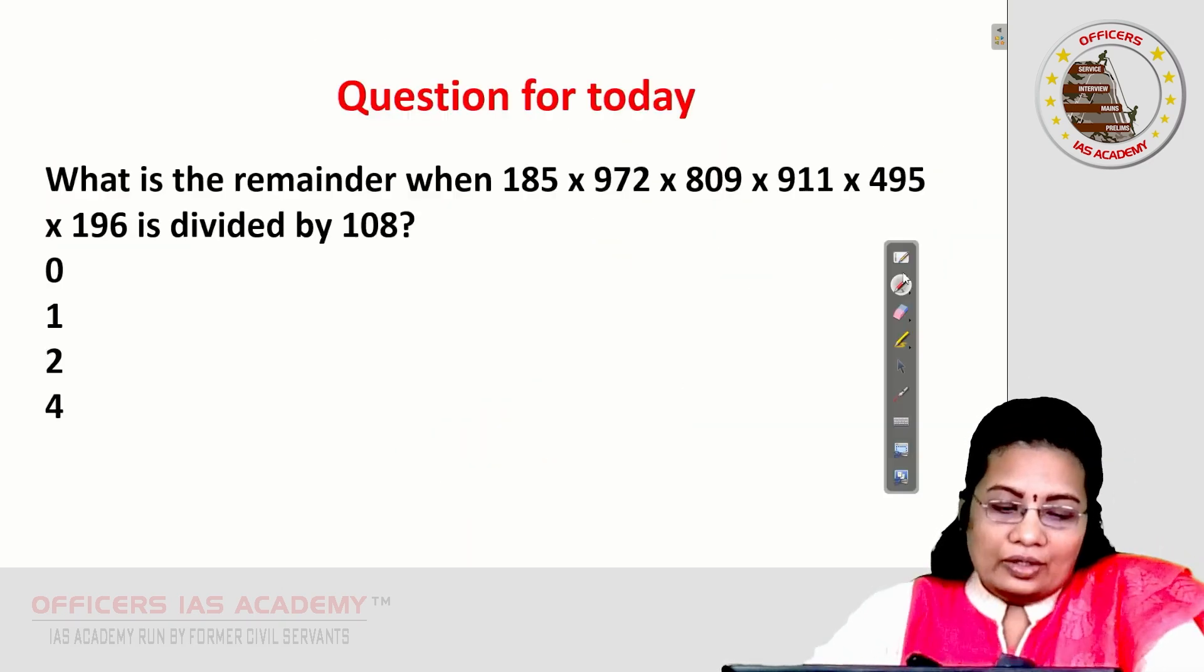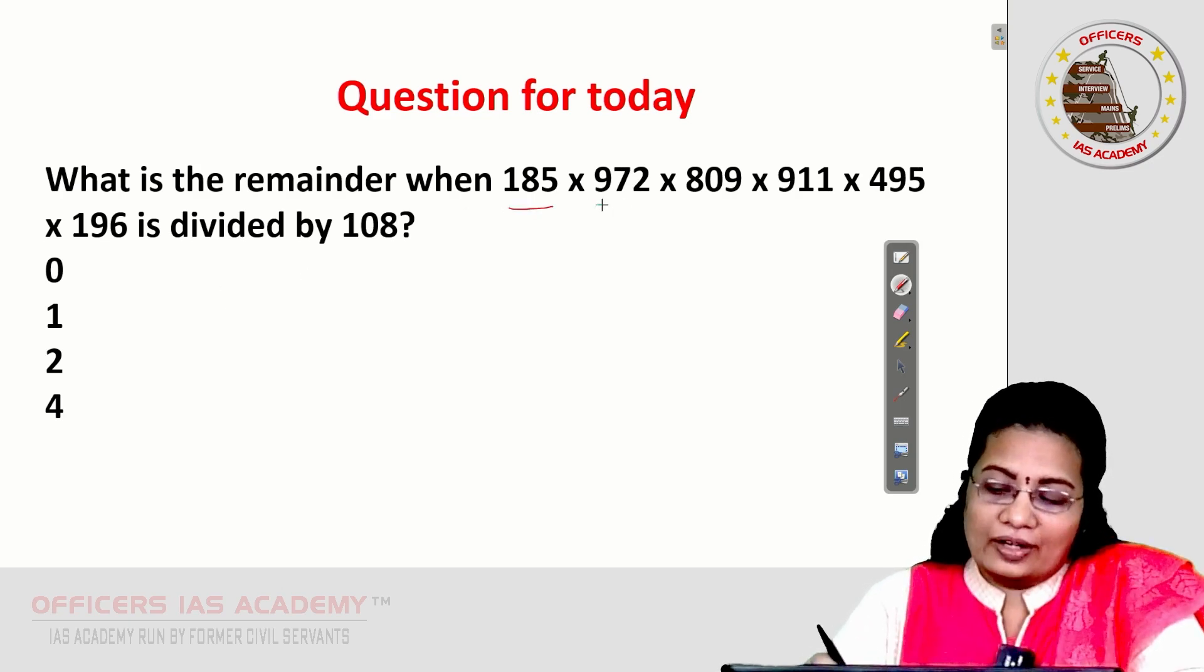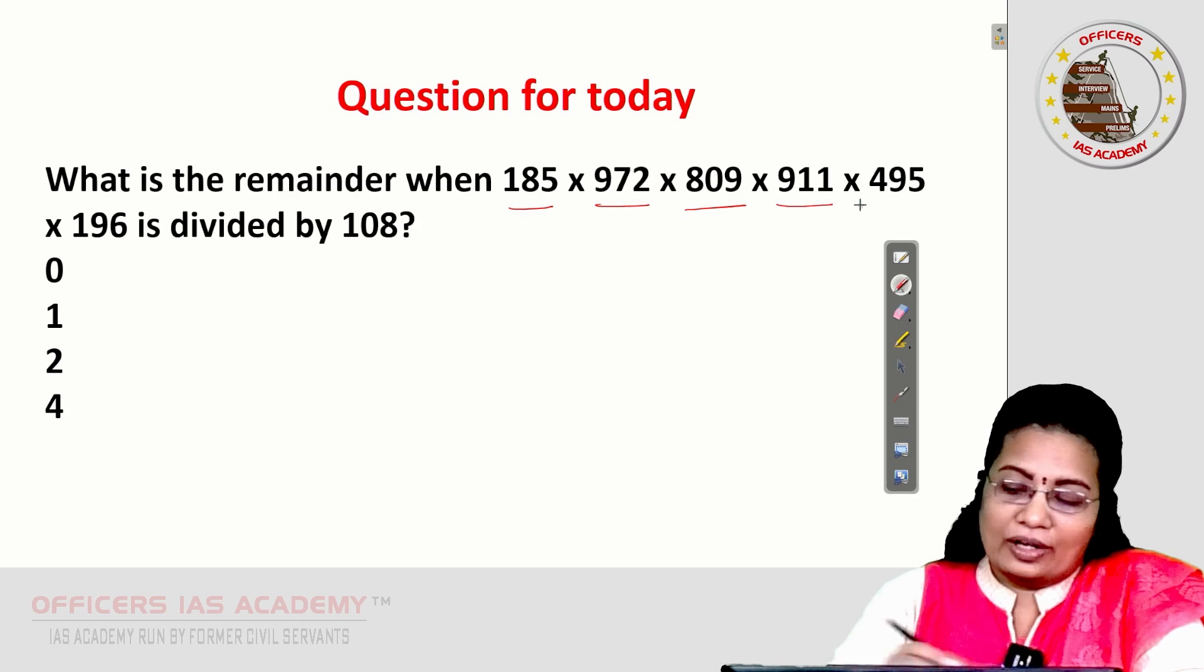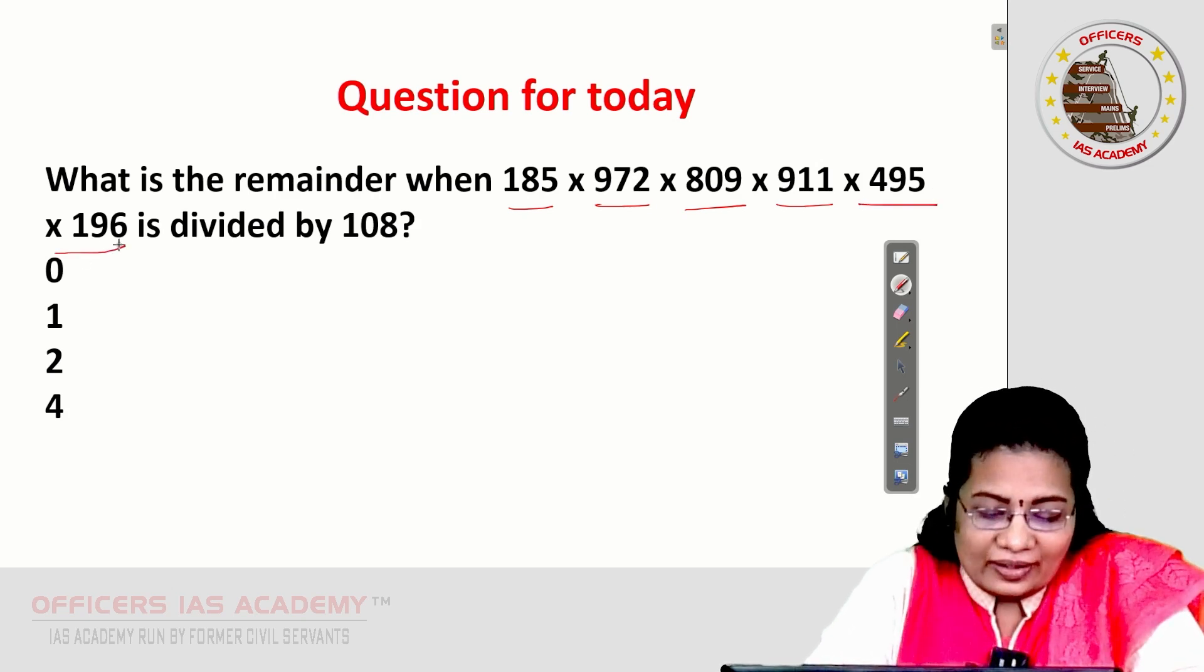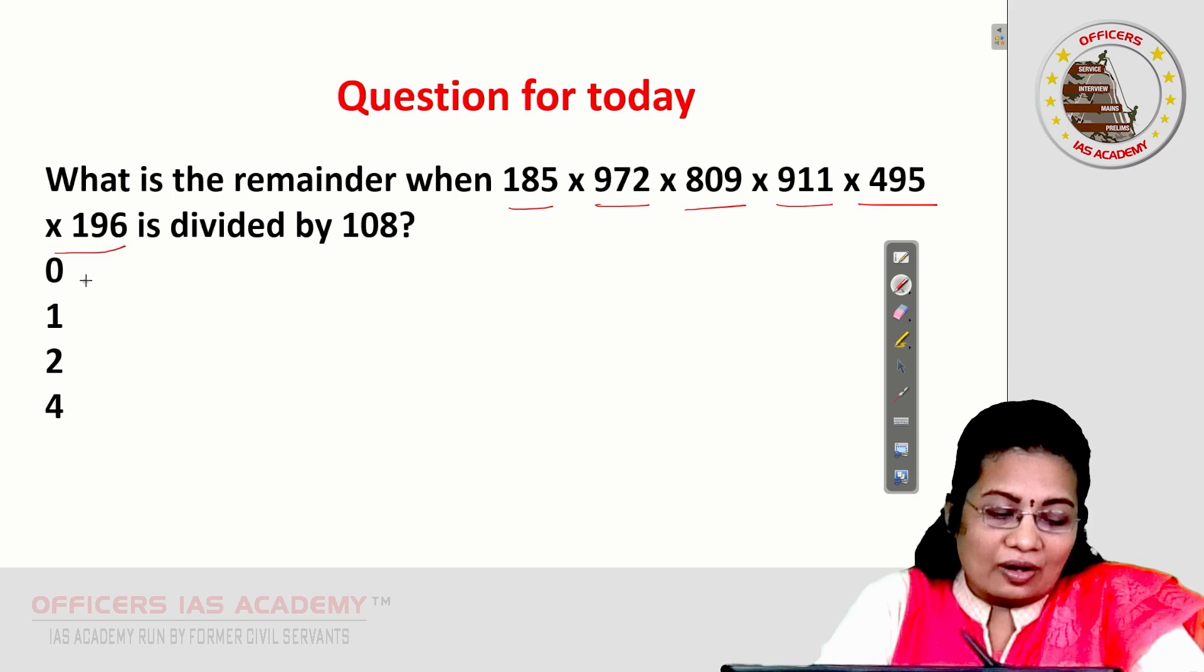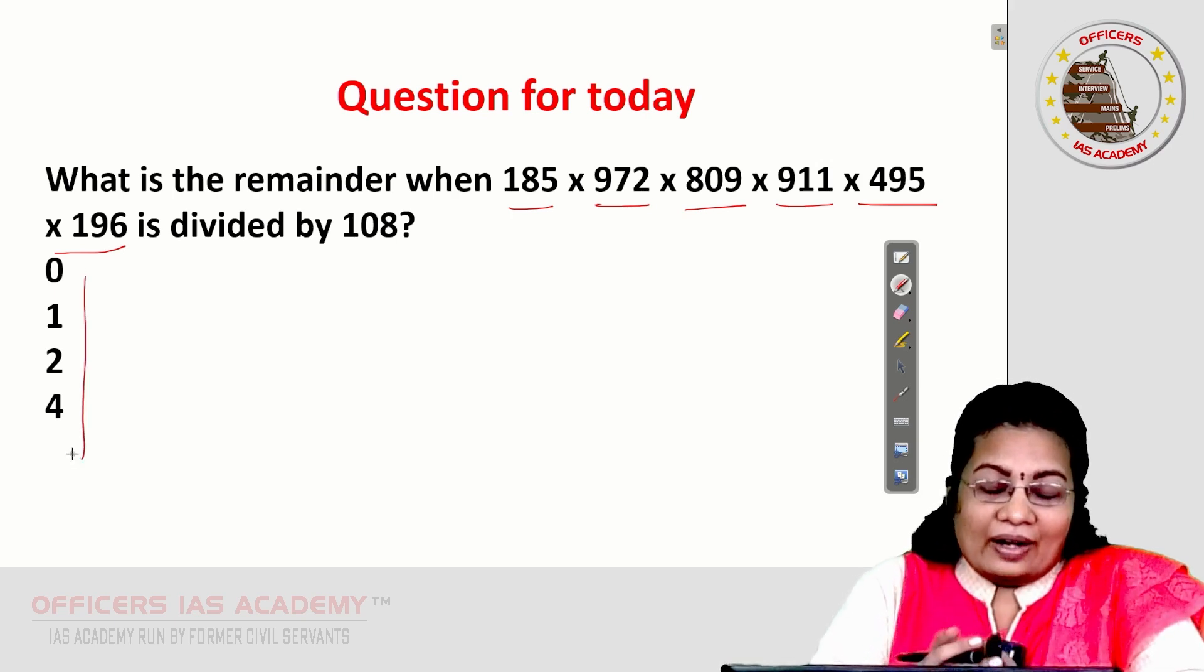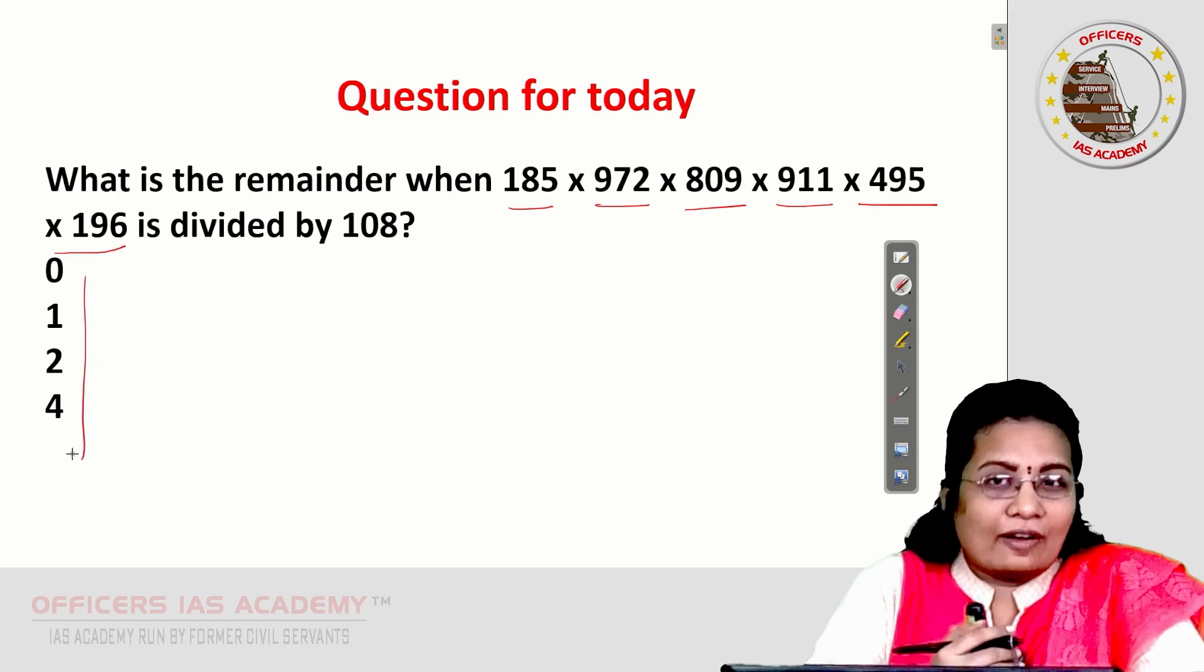Today's question. What is the remainder when the product of 185, 972, 809, 911, 4, 95 and 196 is divided by 108. Four options are given to you. You can try to solve this and register your answer in the comment section.